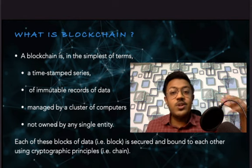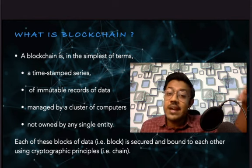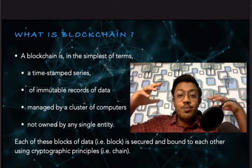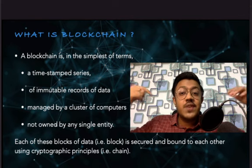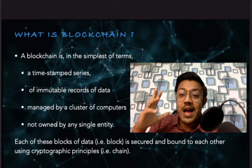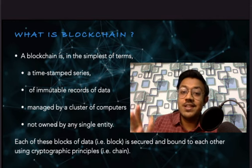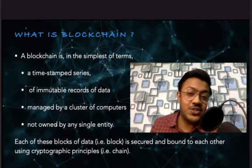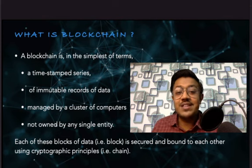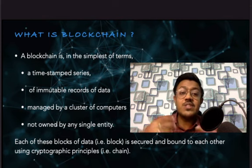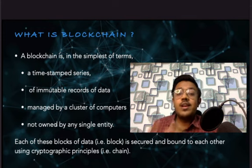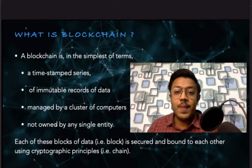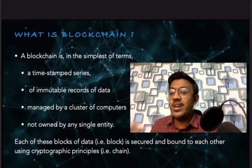All the data you had earlier with Google Sheets or apps has a central server controlled by a central entity. Blockchain is not controlled by a central entity. All data on the blockchain is bound by cryptographic principles — for Bitcoin, that is SHA-256. These are the security mechanisms these platforms deploy. That is what exactly a blockchain is.